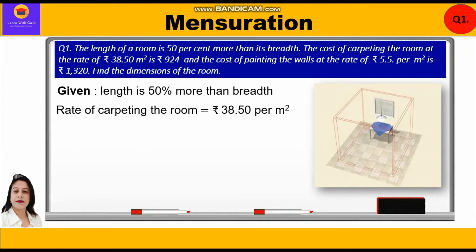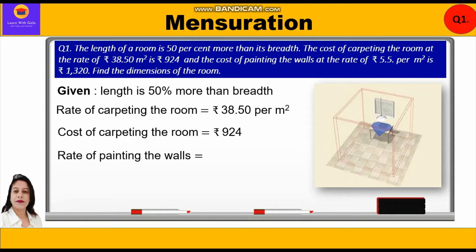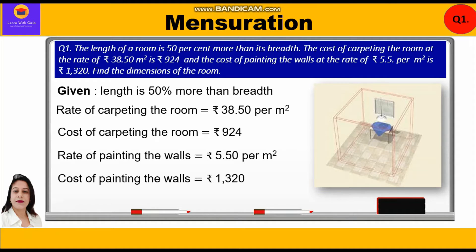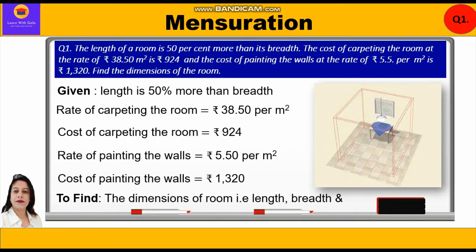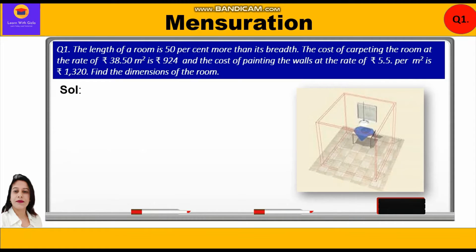Given: length is 50% more than breadth; rate of carpeting is rupees 38.50 per meter square; cost of carpeting is rupees 924; rate of painting the walls is rupees 5.50 per meter square; and cost of painting the walls is rupees 1320. We have to find the dimensions of the room.